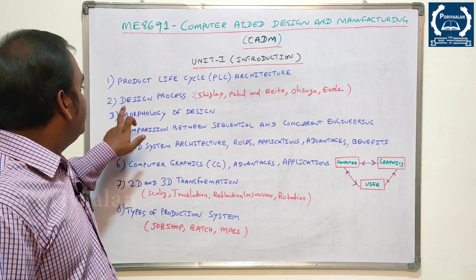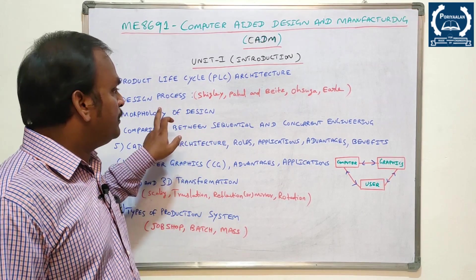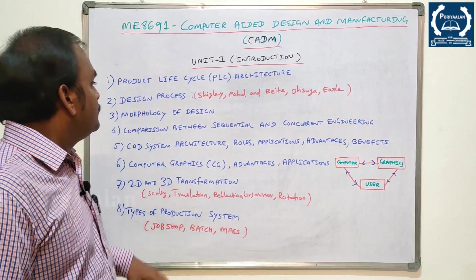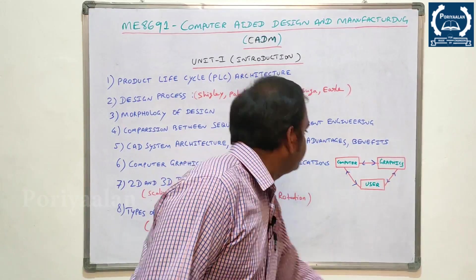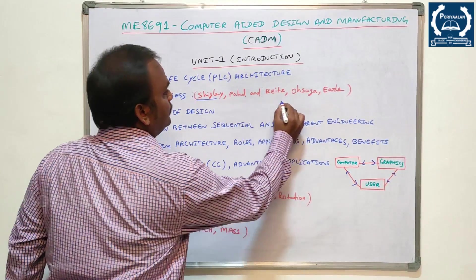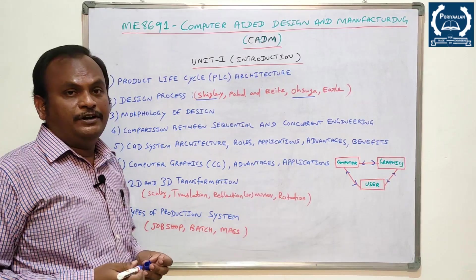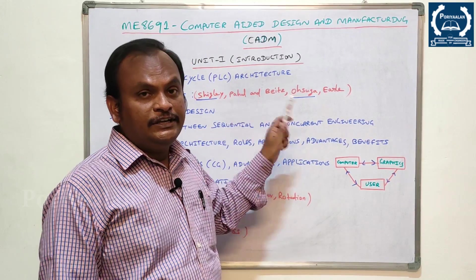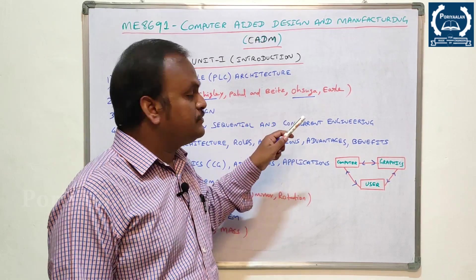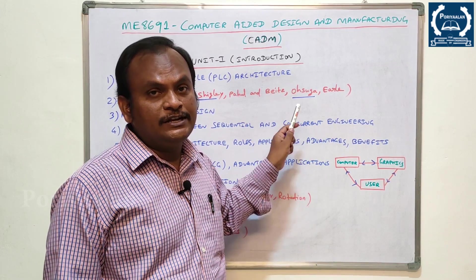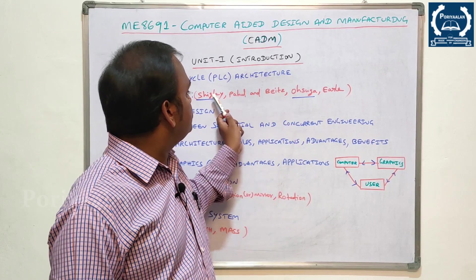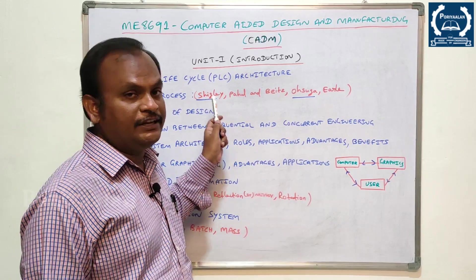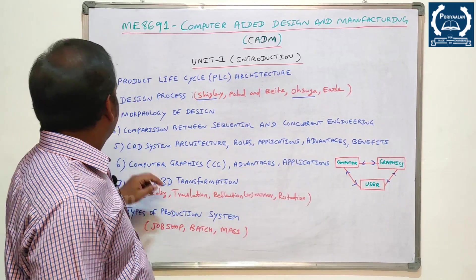The second question is Design Process. There are 4 types: Shigley, Pahl and Beitz, and Osuga. Here, Shigley and Osuga are very important. This is a Design Process division. You can use these 4 types, but Shigley and Osuga are the two most important divisions.